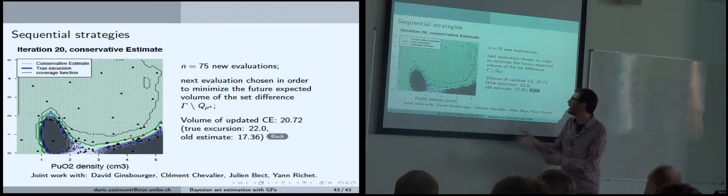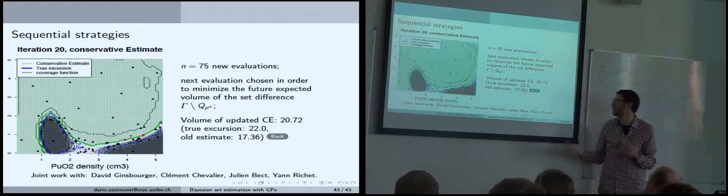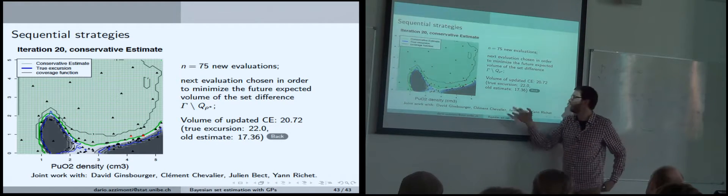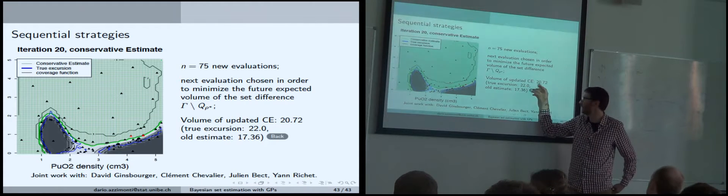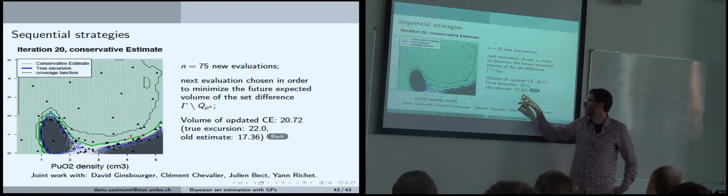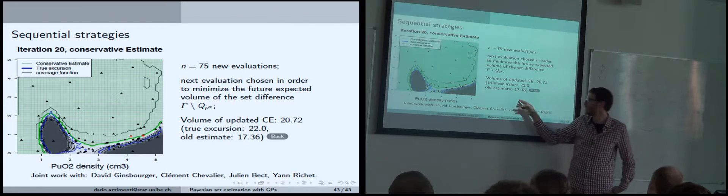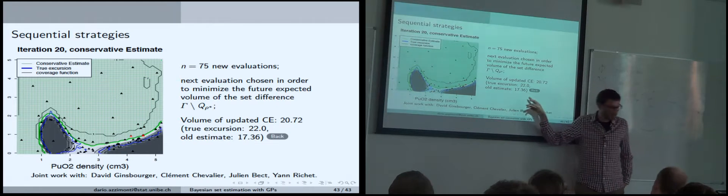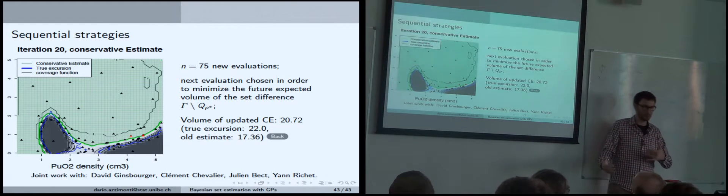After 75 new evaluations, we got this type of estimate. One way of checking what it means: the volume of the updated conservative estimate is still smaller than the true excursion — which we can compute since this is a test case — but it's much bigger than the old estimate. So in some sense we've reduced the underestimation we were doing before.